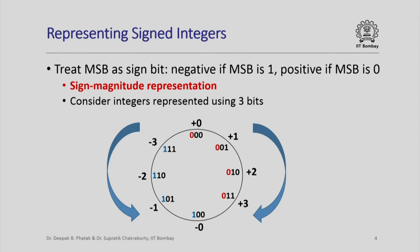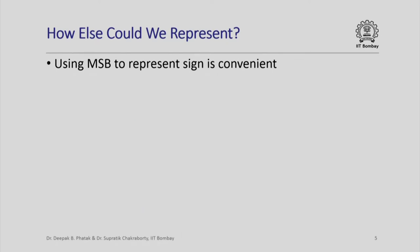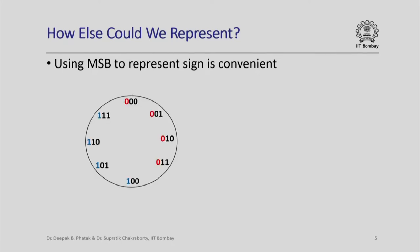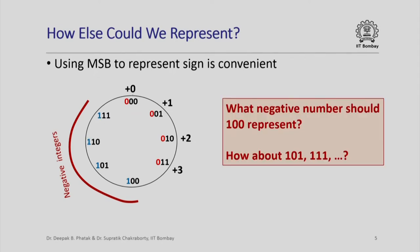Sign magnitude has two increasing directions around the circle and gives rise to a wasteful representation with two representations of 0. Before going to 2's complement, we ask: how else could we represent negative integers in binary? Using the MSB to represent the sign is convenient since we can look at one bit to tell whether the number is positive or negative. So we keep the MSB as the sign bit — meaning 100, 111, etc. must represent negative integers — but what negative integer should each bit sequence represent?